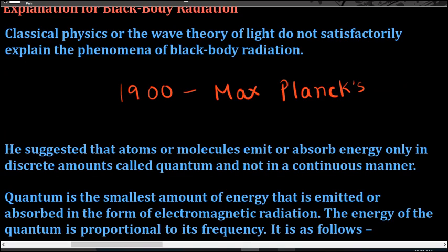Planck suggested that an atom or a molecule emits or absorbs energy only in discrete amounts called quanta, and not in a continuous manner. According to Planck, molecules or atoms emit or absorb energy only in discrete amounts — that is, in packets — which are known as quanta. A quantum is the smallest amount of energy that is emitted or absorbed in the form of electromagnetic radiation.